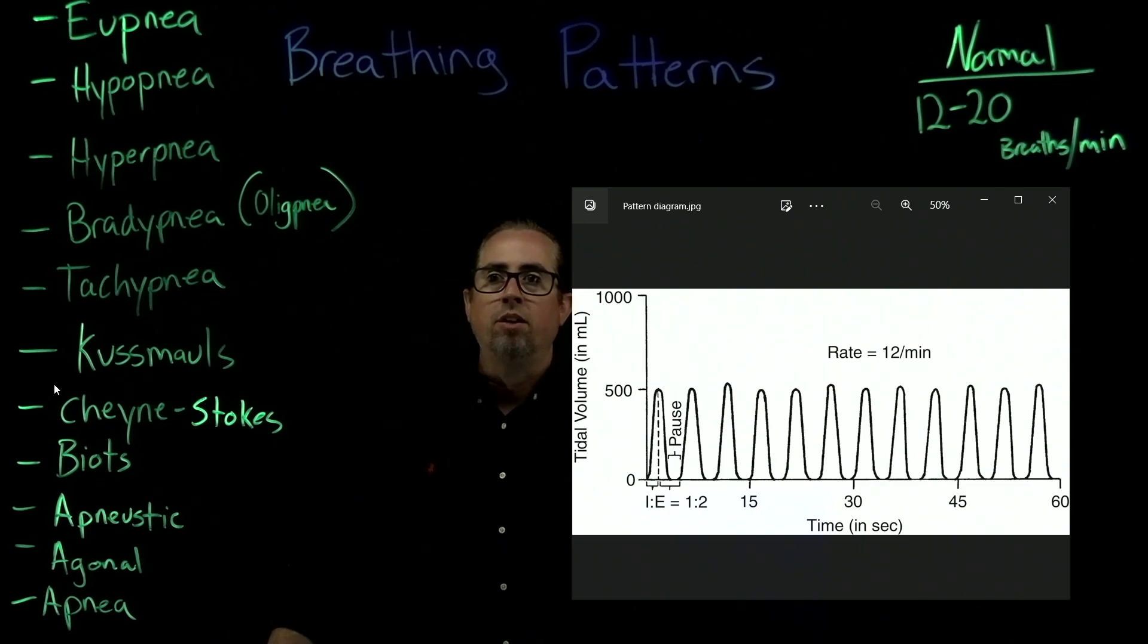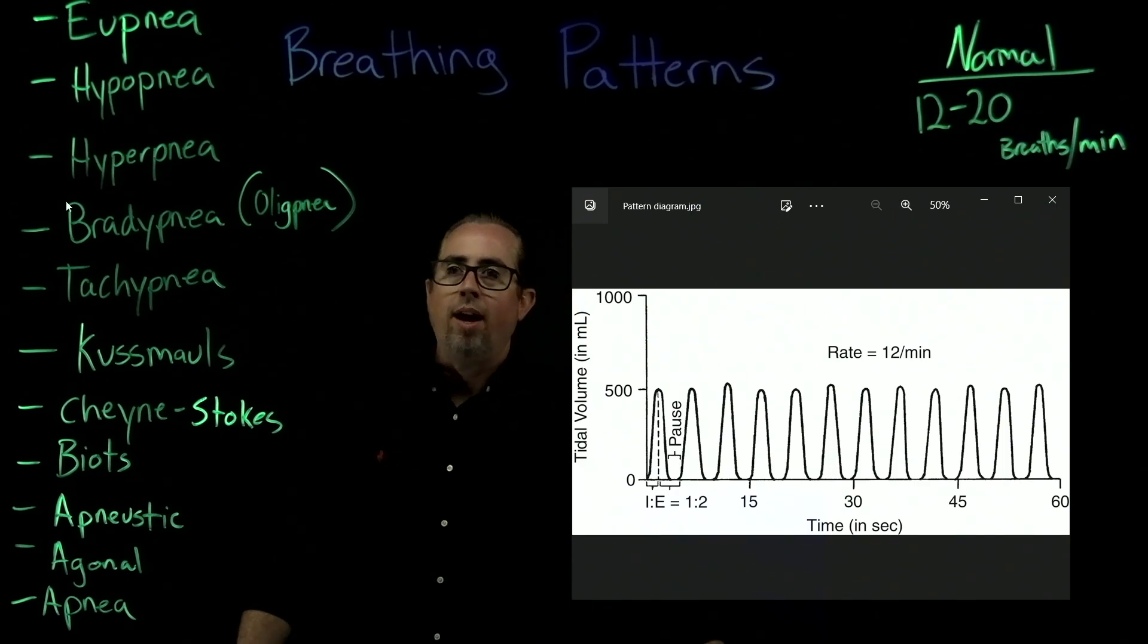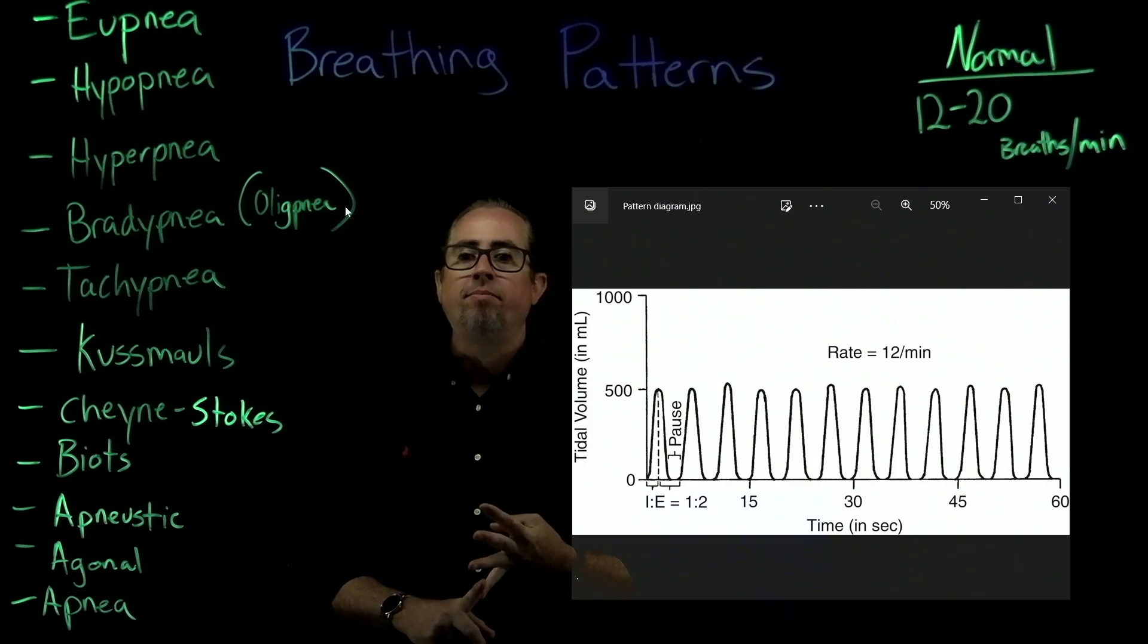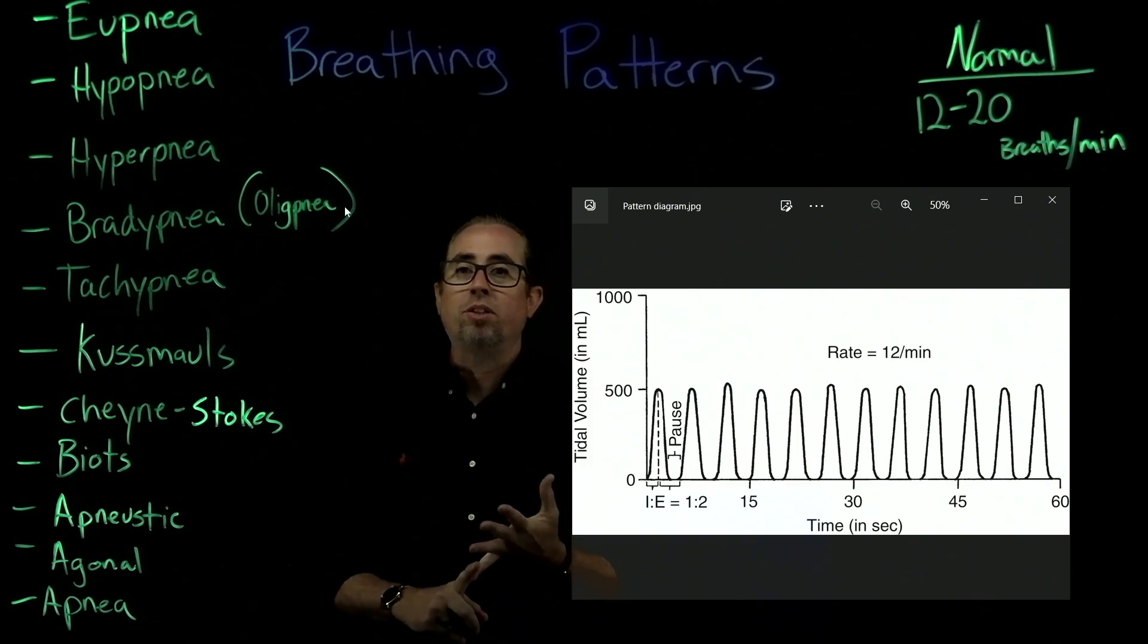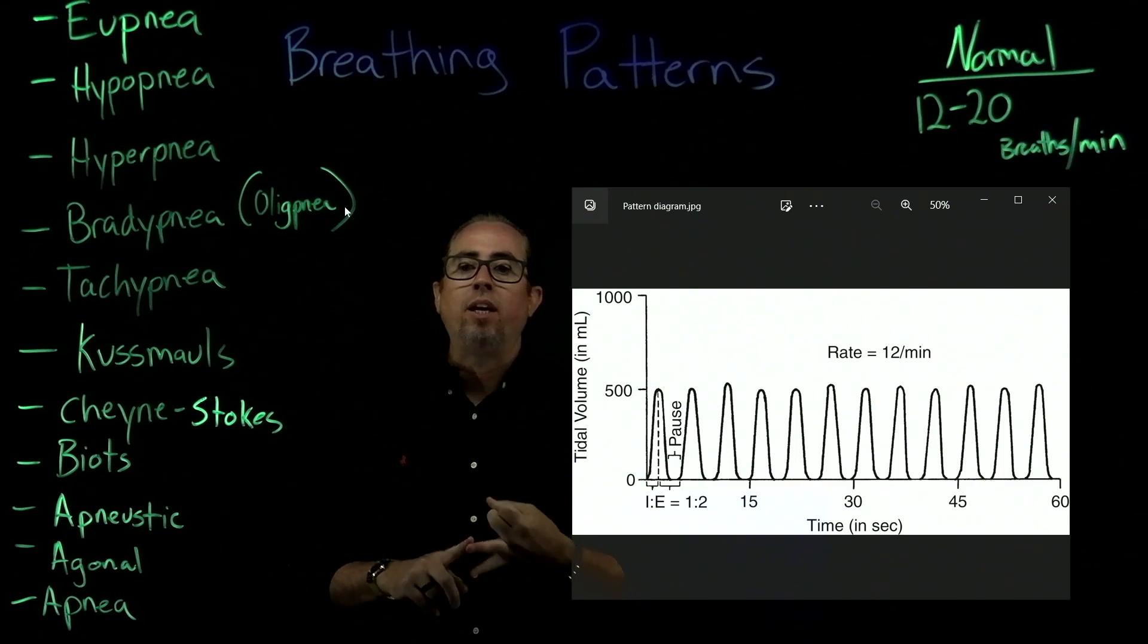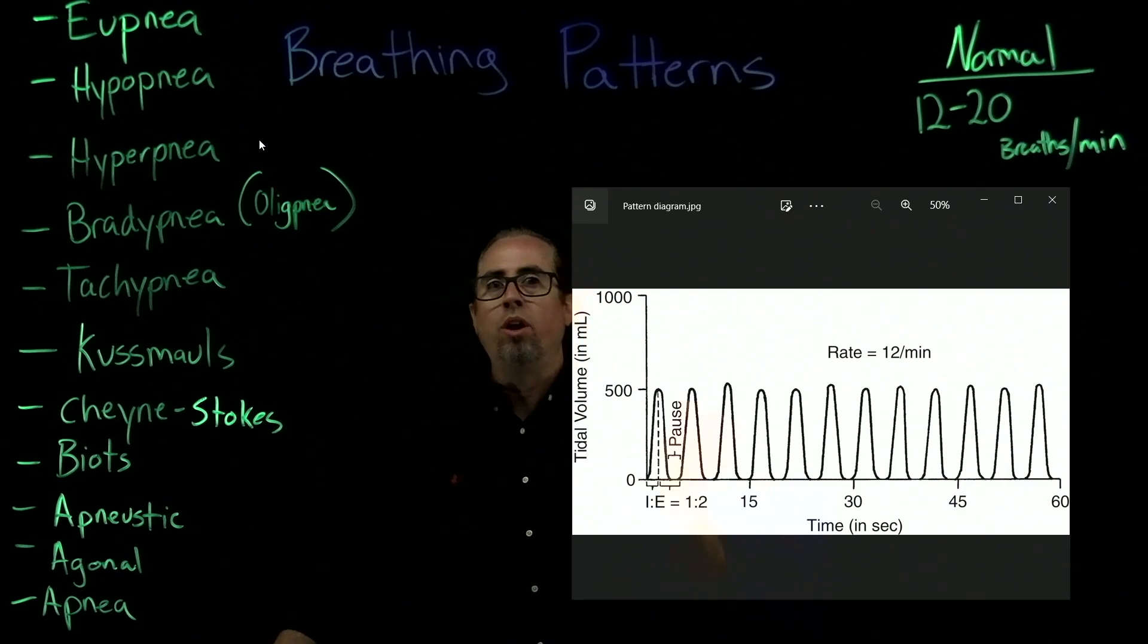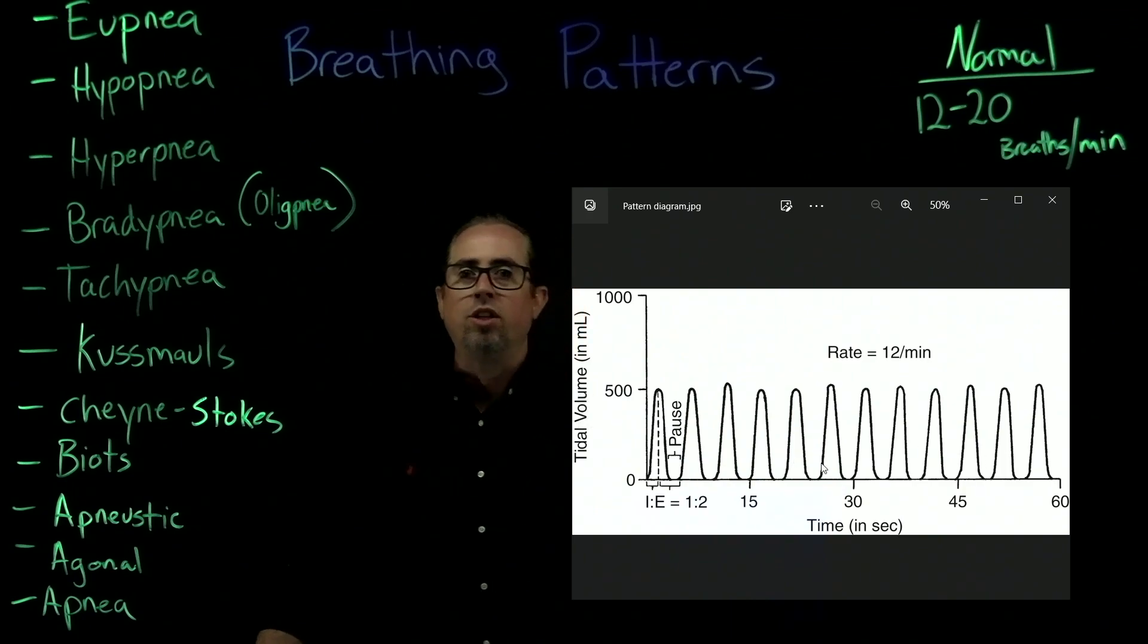What about hyperpnea or tachypnea? Very similar, can be combined. We look at hyperpnea: acidosis, fever, pain, anxiety. Same thing with tachypnea: hypoxia, fever, pain. All that means is either slower than 12 breaths or more than 12 breaths, but very similar to this normal pattern that you see here.